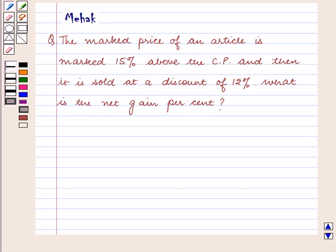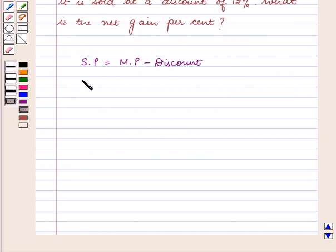We will use the following formulas to solve this question. For example, selling price is equal to mark price minus discount. Also, profit is equal to selling price minus cost price. And profit percent is equal to profit upon cost price into 100.